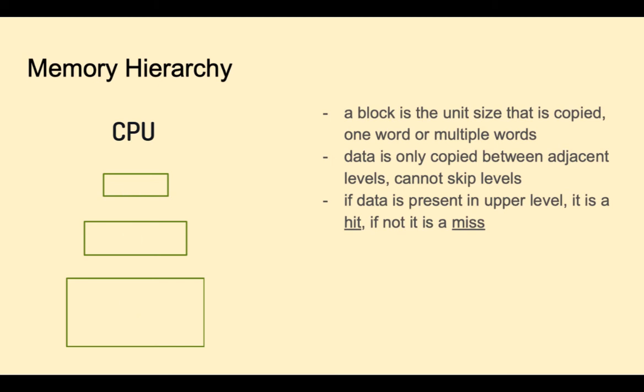The hit rate is the percentage of time that the CPU looked for something and found it. The hit time is not zero. It takes time to access the memory, including time to determine if it's a hit or miss. The miss rate is the percentage of time that the CPU looked for something and didn't find it. The miss penalty is the time required to replace a block in the upper level with the block from the lower level.